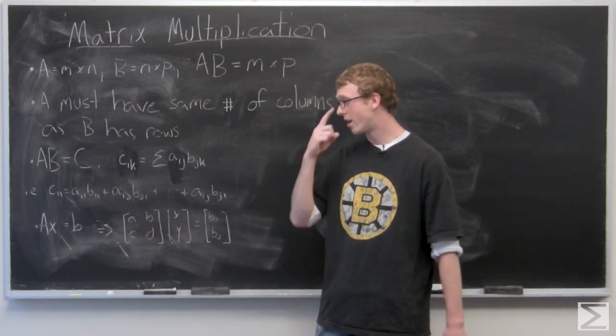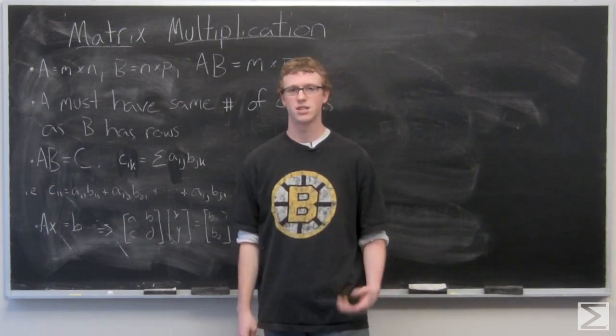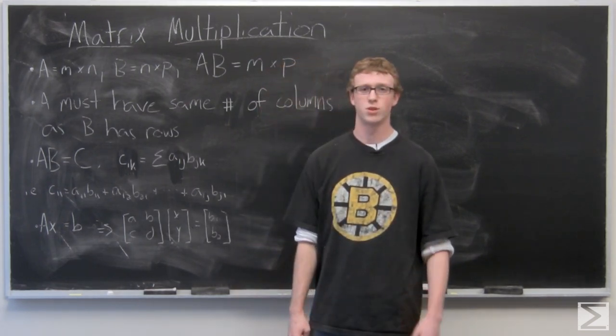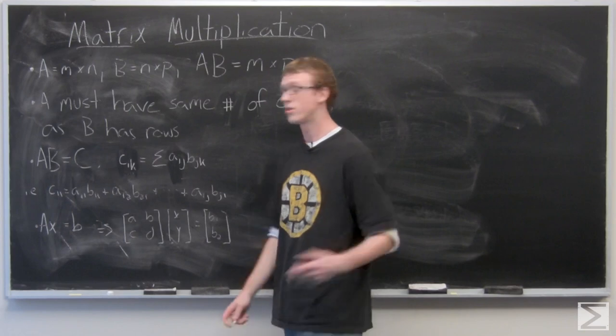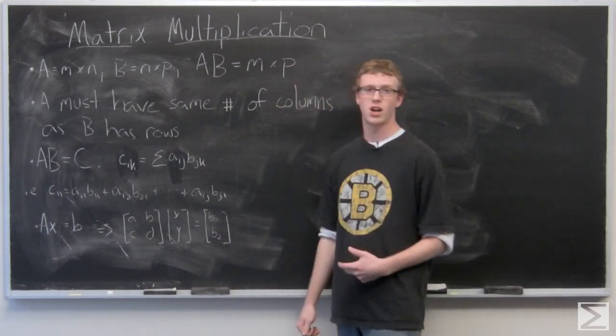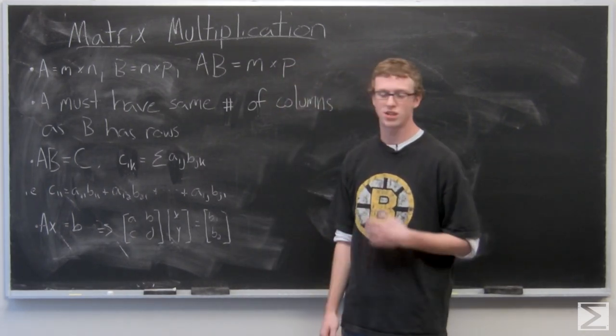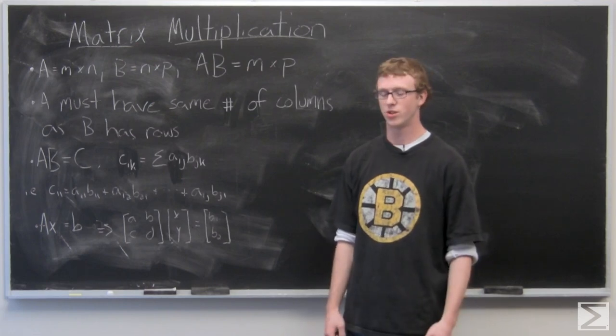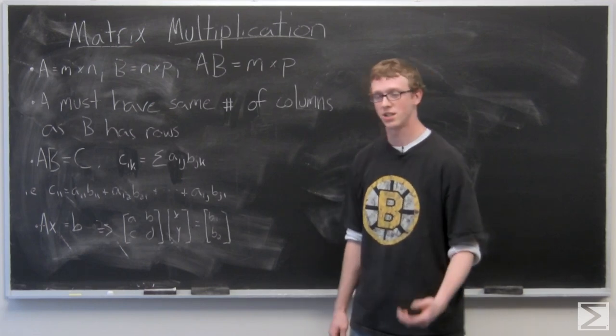And now we're just going to take a look at some examples just so you guys can see how matrix multiplication really does work with numbers. So first we're going to start off with two 2x2 matrices. The resultant is going to be a 2x2 matrix. It's one of the most basic examples we can look at.